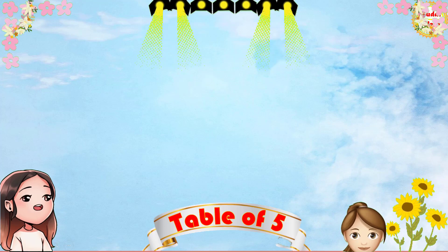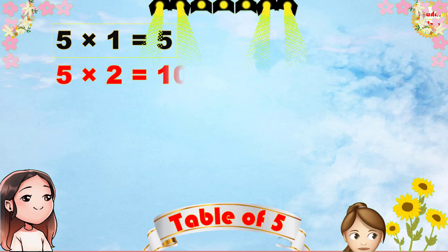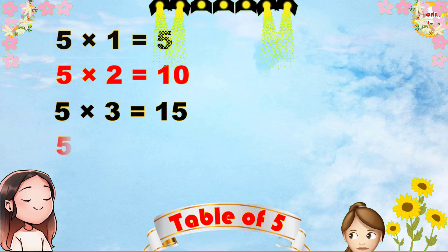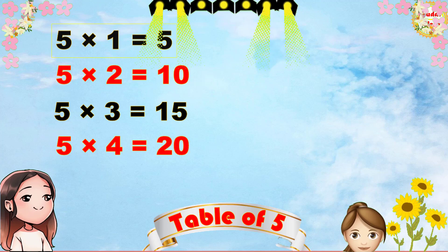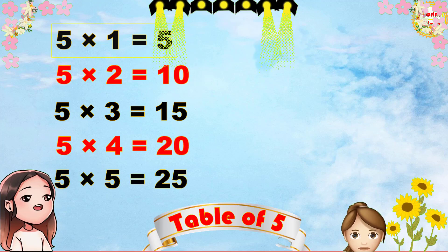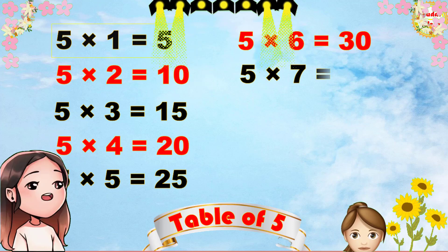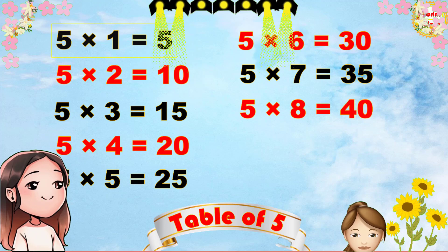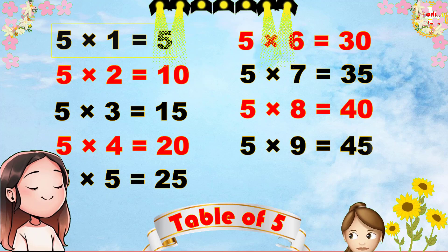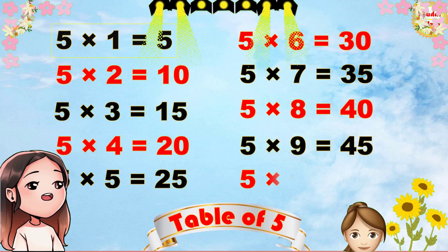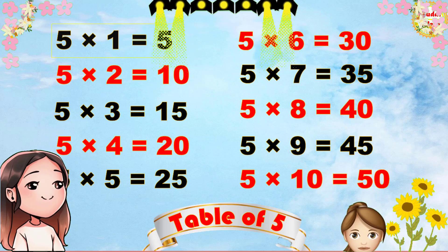Once again. 5 1s are 5, 5 2s are 10, 5 3s are 15, 5 4s are 20, 5 5s are 25, 5 6s are 30, 5 7s are 35, 5 8s are 40, 5 9s are 45, 5 10s are 50.